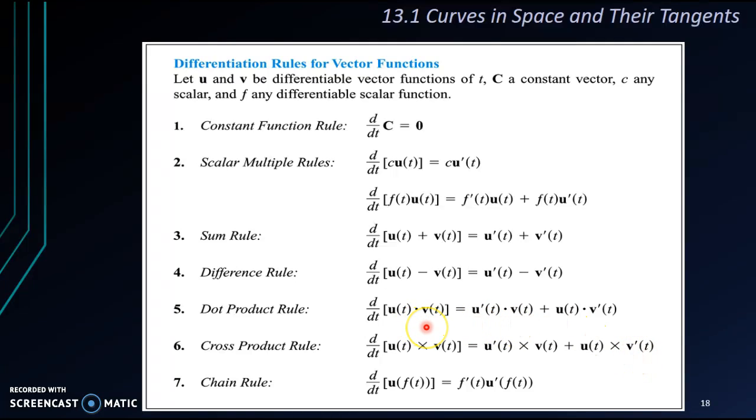Take note of the position of the vector. It doesn't matter for u dot v. If we differentiate u dot v, we get u' dot v plus u dot v'. It doesn't matter if you interchange the position. But when it comes to cross product, do not ever change the position. Because once you change the position, you will get the wrong sign, and you will get the wrong answer.